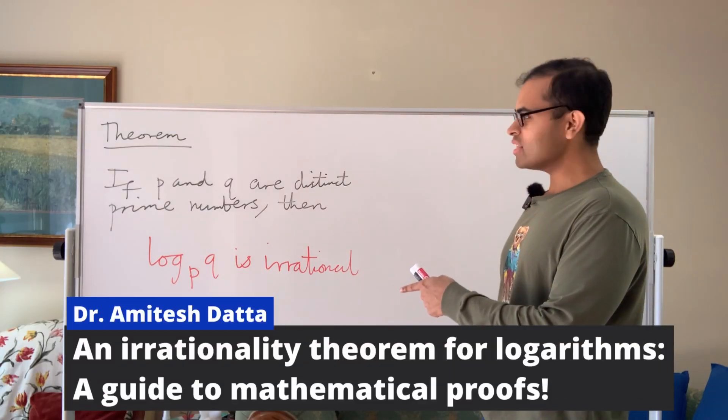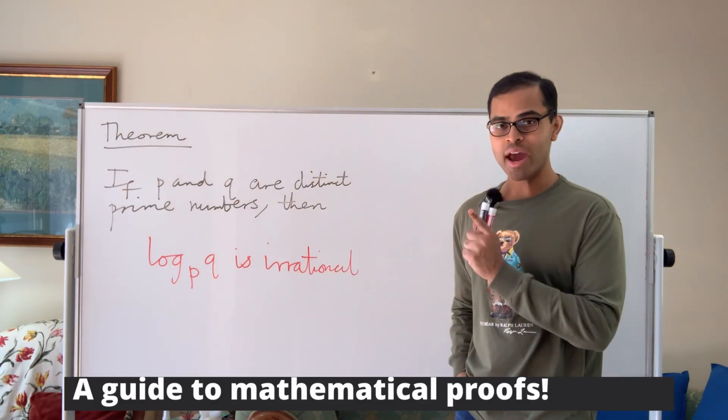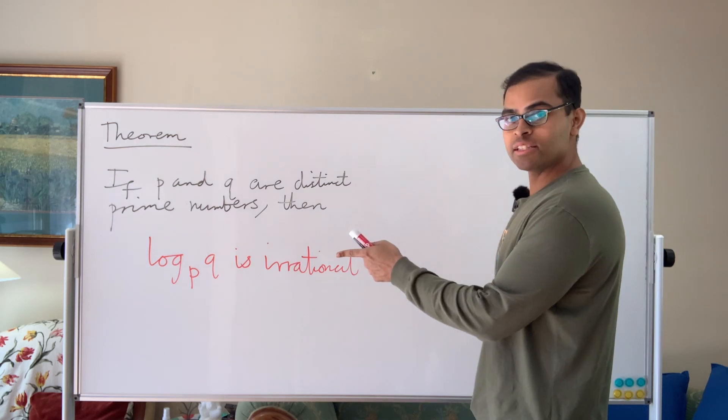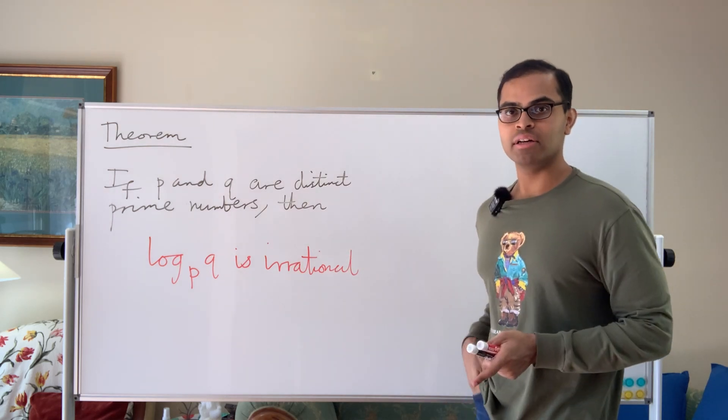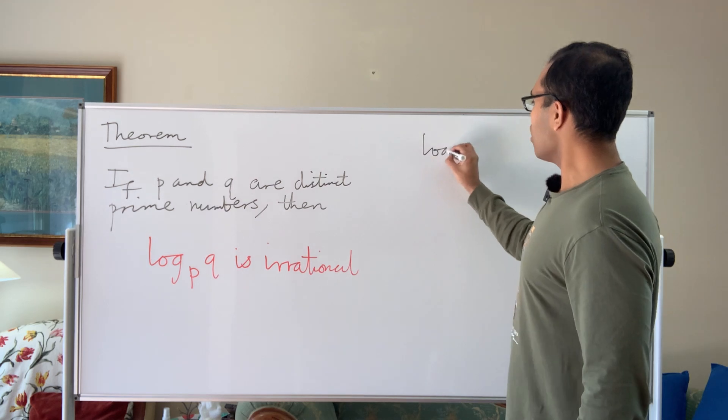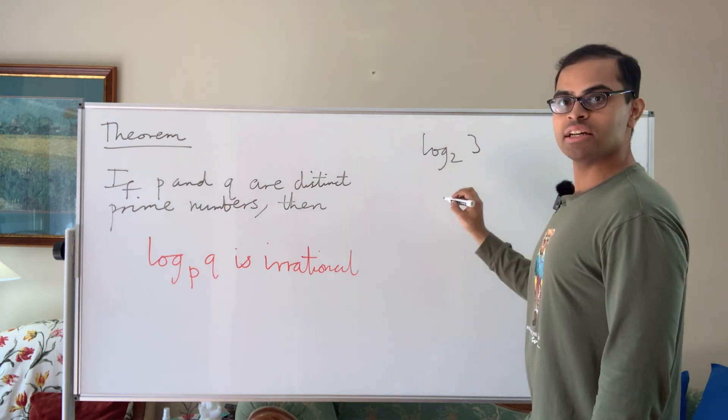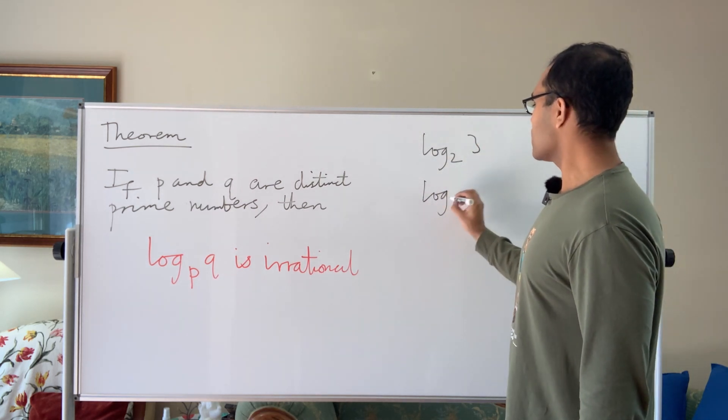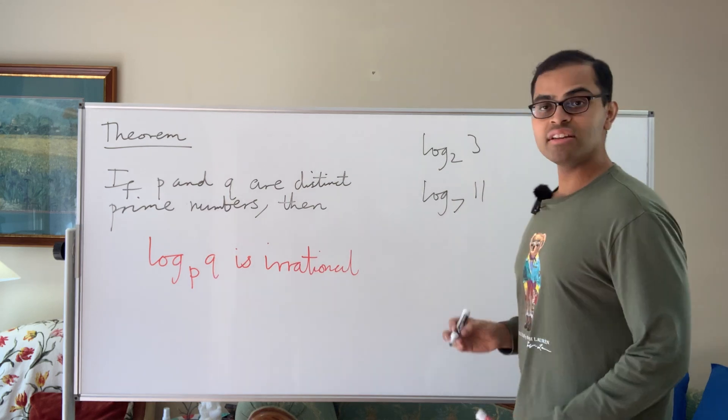We're going to prove this theorem: if p and q are distinct prime numbers, then log to the base p of q is an irrational number. So for example, you can take 2 and 3 and you can say that log to the base 2 of 3 is irrational, or any two prime numbers you like. Log to the base 7 of 11 is irrational.